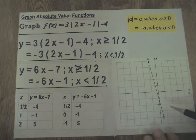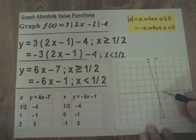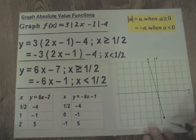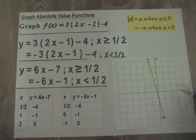So let's plot these points. 1/2, -4. 1/2, -4. And note now, this open circle gets filled up.